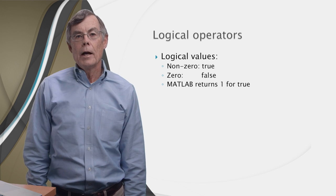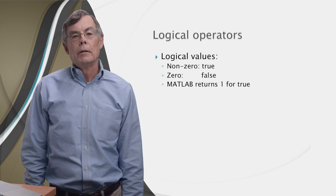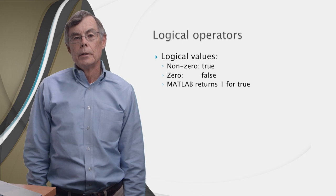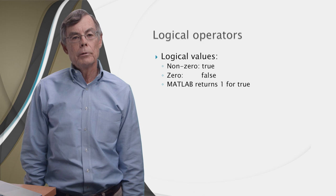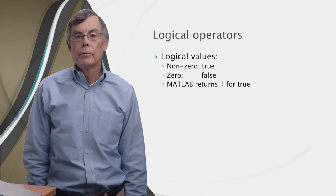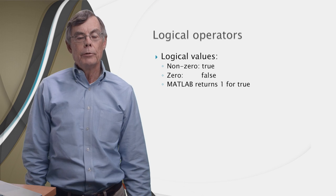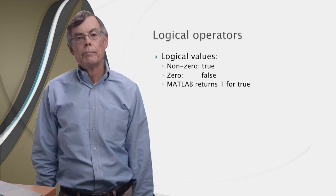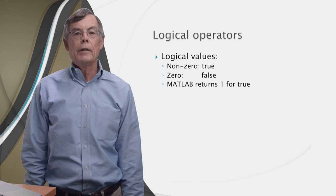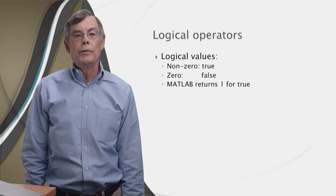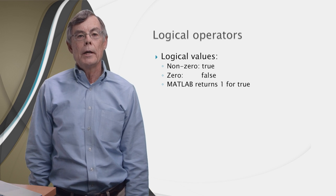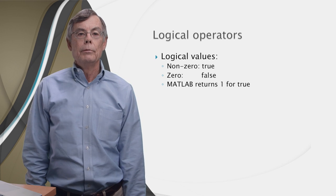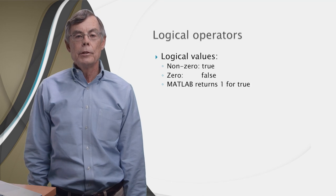Let's recap the subject of logical values because it's a really important concept. If MATLAB is asked to consider a non-zero input as logical, it will interpret it as true. If MATLAB is asked to consider the input zero as logical, it will interpret that as false. When MATLAB outputs a logical false it outputs zero, and when it outputs a logical true it always outputs 1. You can give any value to MATLAB to be interpreted as logical - if it's neither zero nor one, say 98.6 or minus 30, MATLAB will treat it as true, but always return 1 for true and 0 for false.